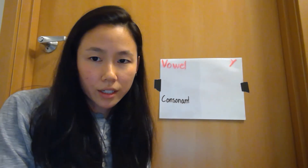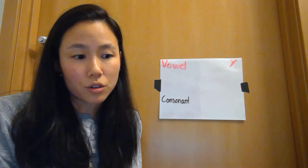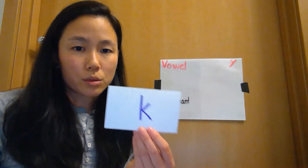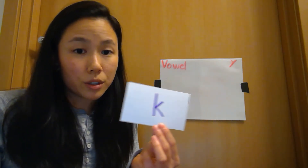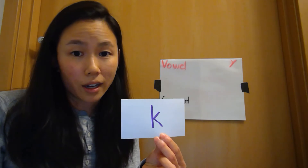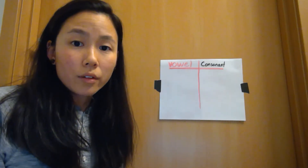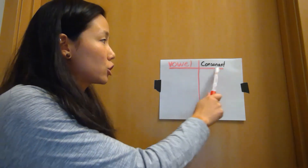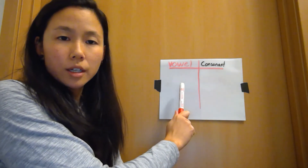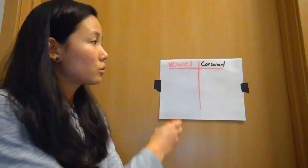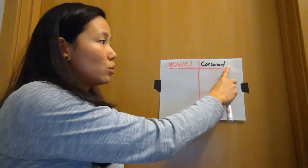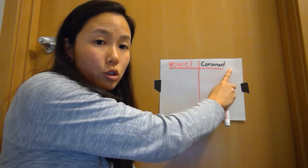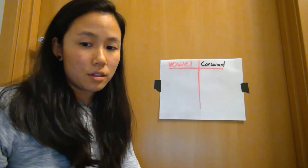I hope you had fun playing that game. It's something you can make at home with your family — just write one letter on a flashcard, and then sort them into consonants and vowels. For our next activity, you're going to need a piece of paper. Make a little chart like a scoreboard: on one side write 'vowel,' and on the other side write 'consonant.' This will help us keep track of how many of each we see.